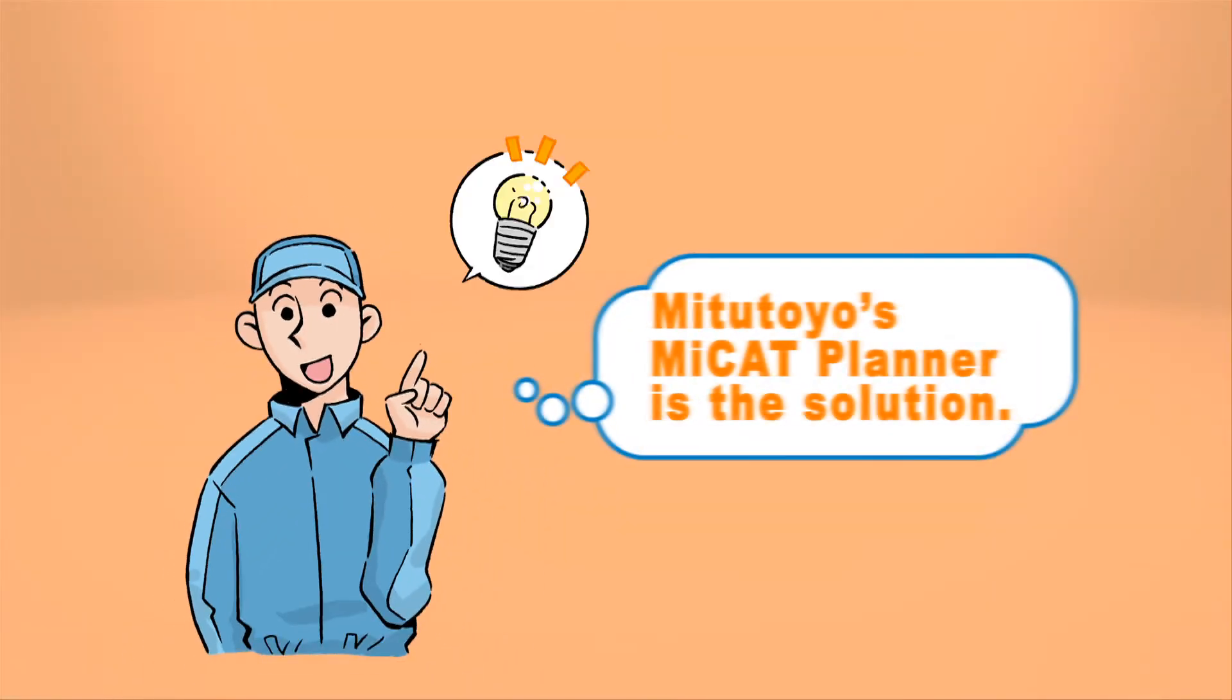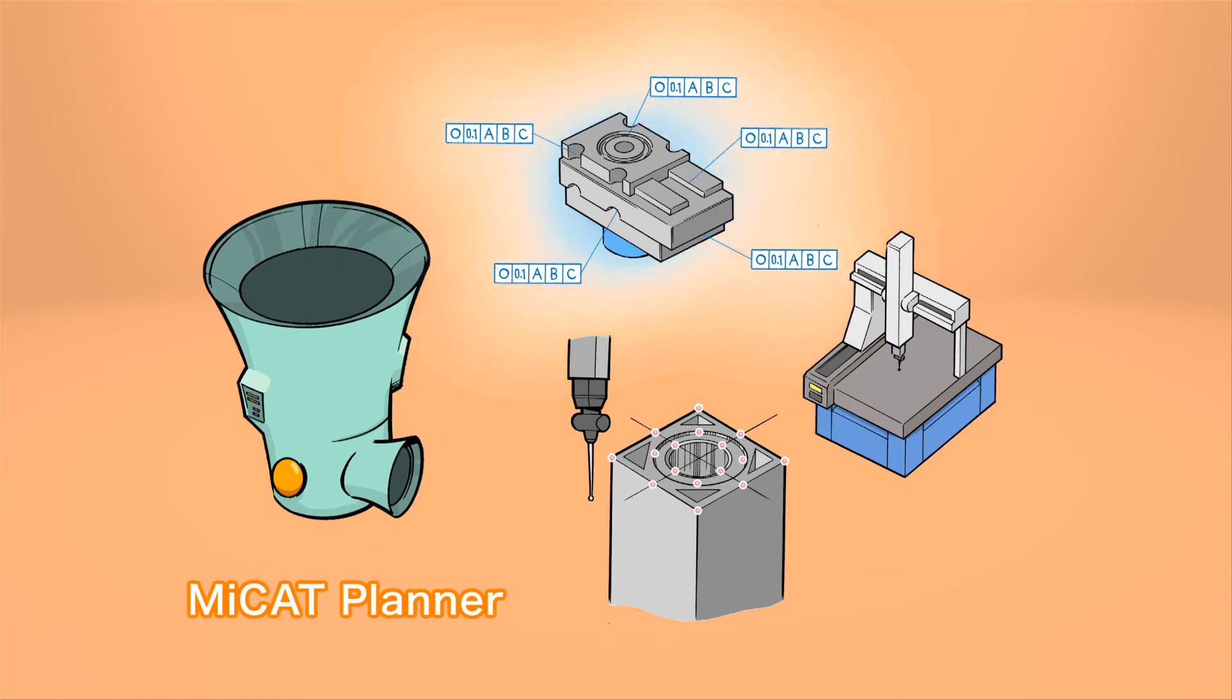The solution is the MyCat Planner by Mitsutoyo. CAD data with tolerance specification of the workpiece. Specification of the 3D measuring equipment. Customer defined measurement rules.